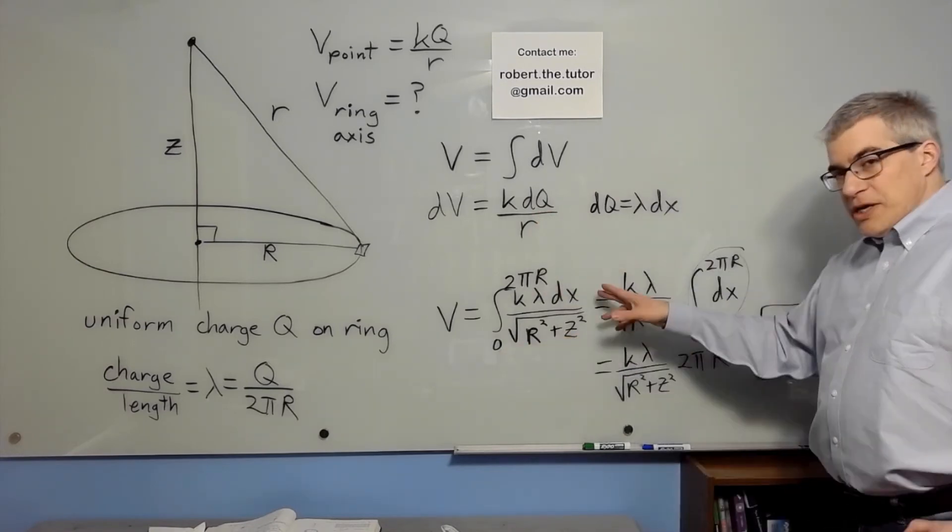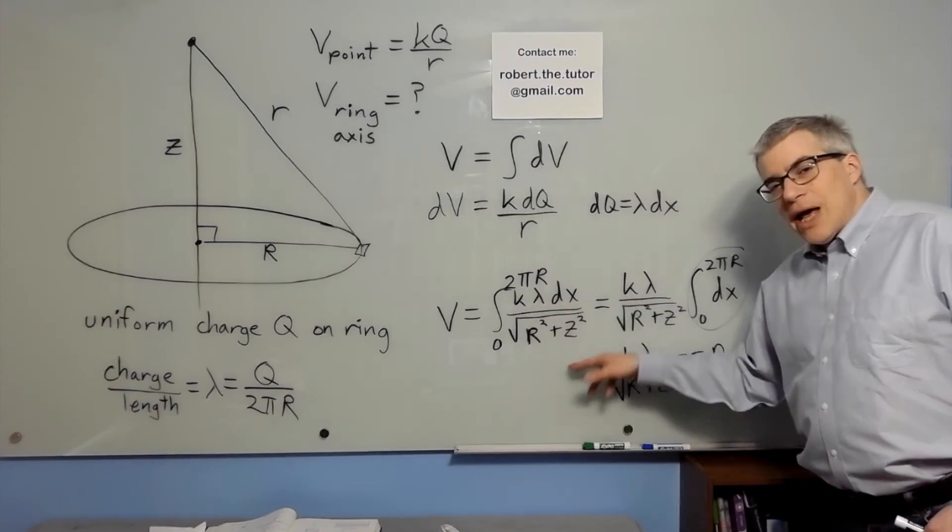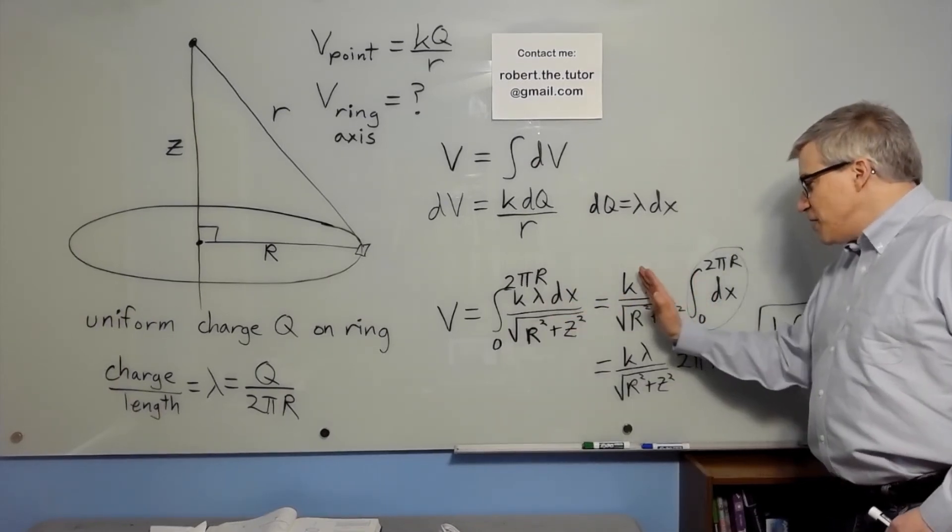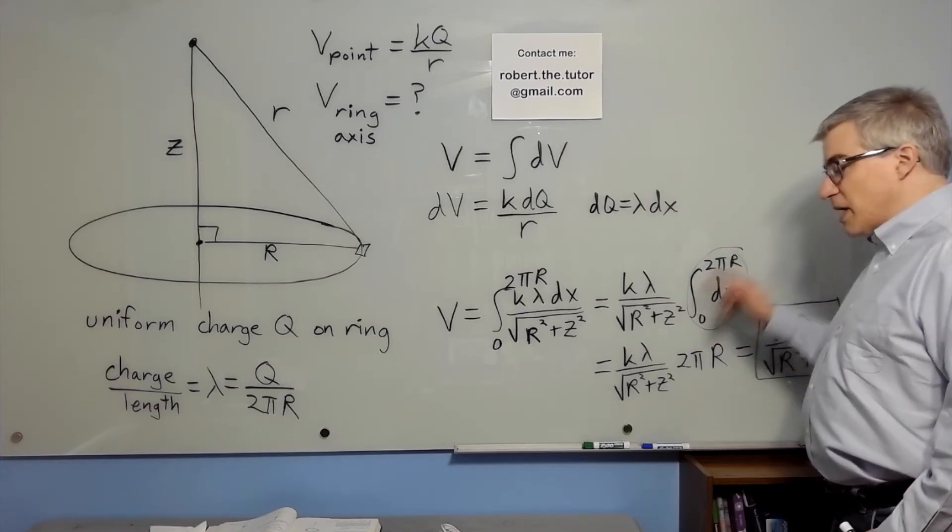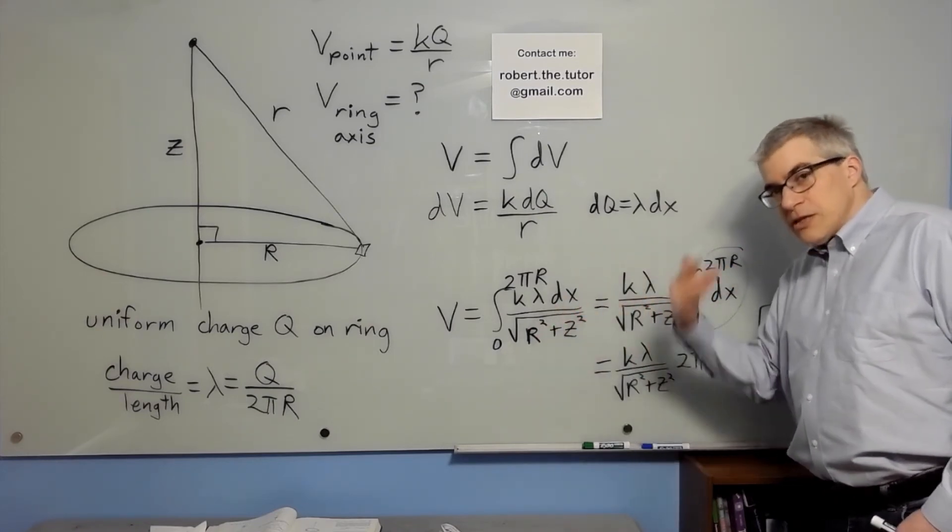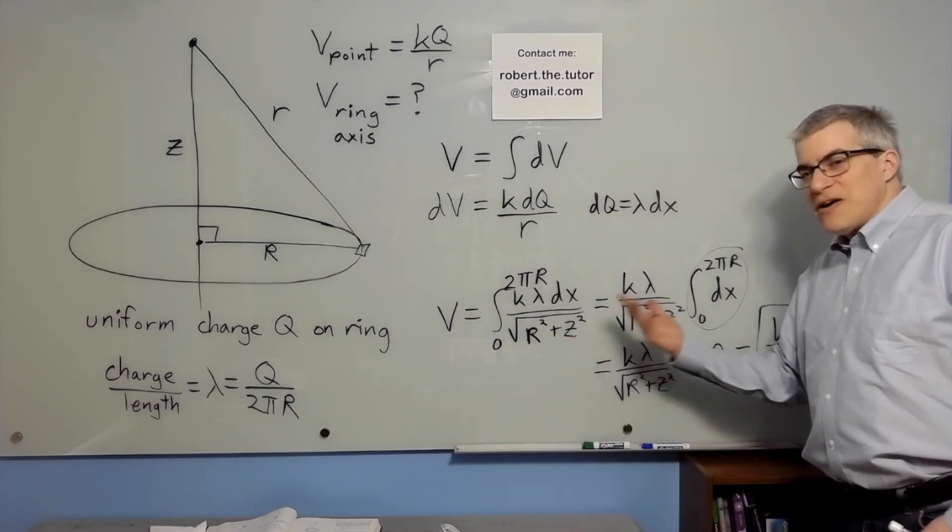The cool thing here is that there are no x's in this. Everything comes out front, and we're just integrating all the little bits of length from 0 to 2 pi R. If you're adding all the bits of length, you get the length, you get 2 pi R.